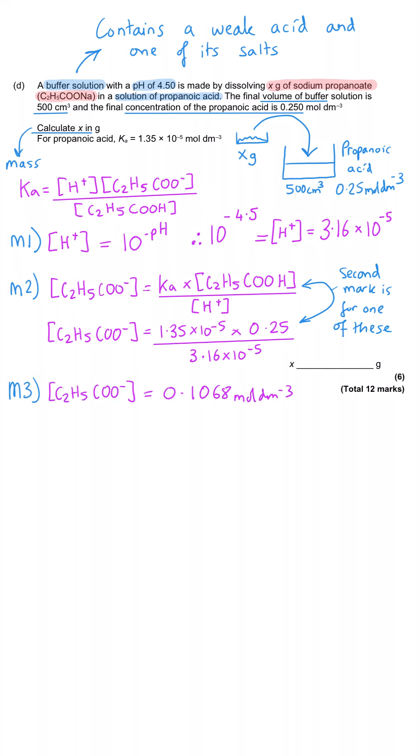When we do that, we end up with a propanoate concentration of 0.1068 moles per decimetre cubed. Now that's a concentration though, not a mass or a moles. So if we look at where we're going with this question, we need to work out a mass of sodium propanoate. To work out a mass, you need to know the MR, and you need to know the moles of that thing. And so that means that we need to work out the MR next.